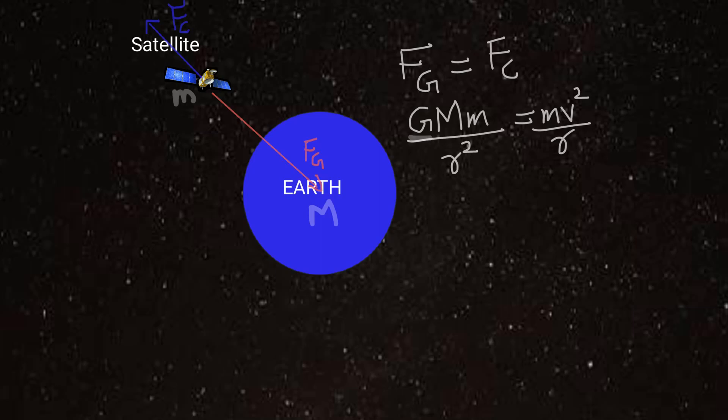On the right hand side we have mv²/r where v is the tangential speed of the satellite. So, in this equation m cancels out and one r cancels. So, we get GM/r = v².